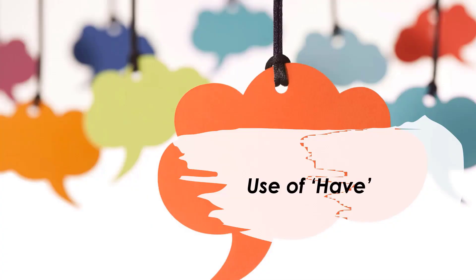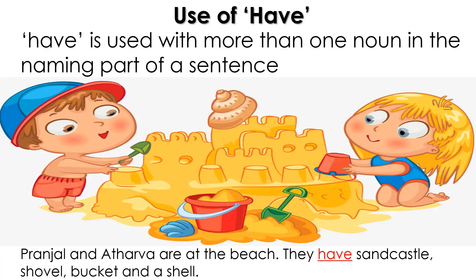Now let's learn where we should use 'have.' 'Have' is used with more than one noun in the naming part of the sentence — meaning plural nouns. Look at this picture: 'Pranjal and Atharva are at the beach. They have a sandcastle, a shovel, a bucket, and a shell.' We are talking about more than one person — plural — so we use 'have.'